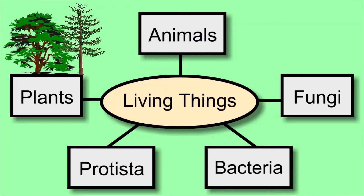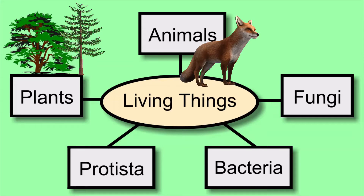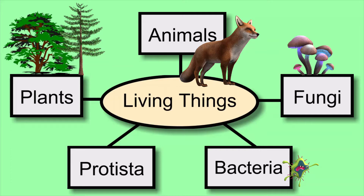Plants are producers. Animals are mostly consumers, though some animals such as some insects are decomposers. Fungi and most bacteria are decomposers. Protists are a mixed group — you can find consumers, decomposers, as well as some producers such as seaweeds in this group. Algae belong to the protista group. Also, some bacteria called blue-green bacteria are producers.